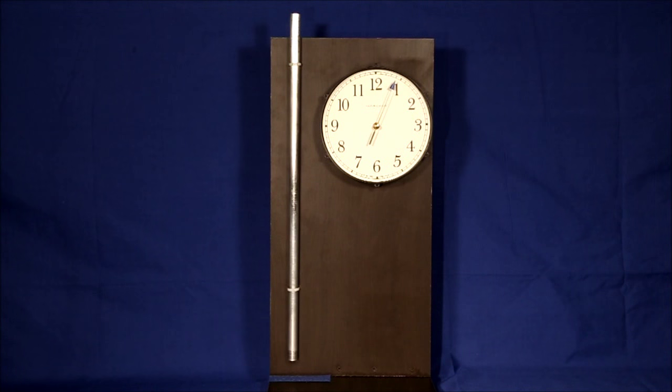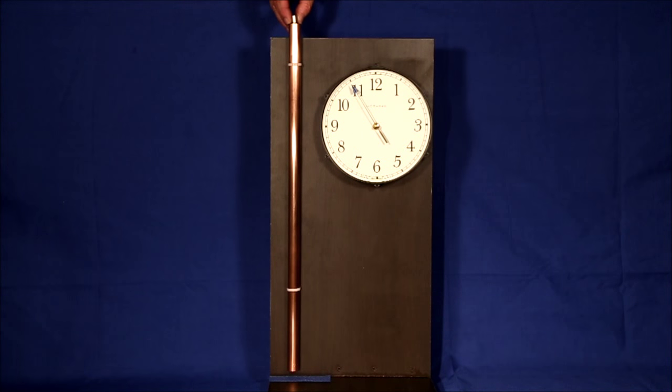Higher resistance means the current induced by the magnetic fields will be lower, so the resulting resisting magnetic field will also be weaker. Finally, let's try a copper tube with a three-quarter inch inside diameter. That took three seconds, which is about what we expected.